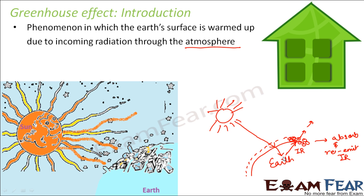This warming up of the earth is required for the survival of living organisms. Had there been no atmosphere, the temperature of the earth would have been very, very low — so low that it would not have been suitable for the survival of living organisms. This concept of trapping of infrared radiation and thus heating up of the earth is known as the greenhouse effect, and the gases which absorb the infrared radiation are called greenhouse gases.